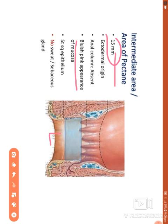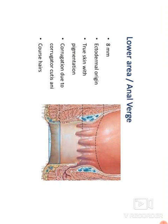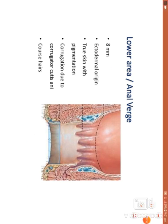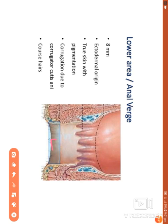The middle and lower parts are separated by a faint white line called the white line or Hilton's line. The lower part is lined with stratified squamous keratinized epithelium with numerous sweat glands, sebaceous glands, and hairs; it is also pigmented. The length of the lower part is 8 mm.